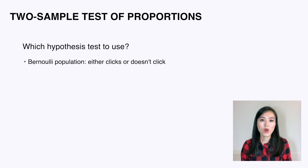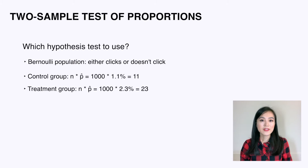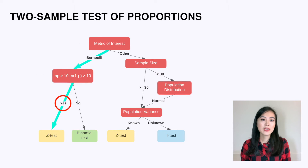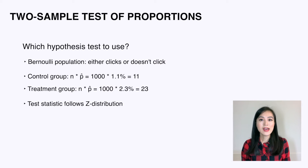Each user either clicks or doesn't click the button, so it's a Bernoulli population. In this case, n times p-hat is 11 in the control group and 23 in the treatment group — both can be considered large samples. So we choose a z-test, meaning the test statistic follows a z-distribution, or standard normal distribution.